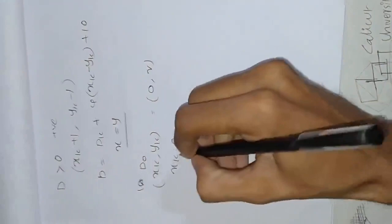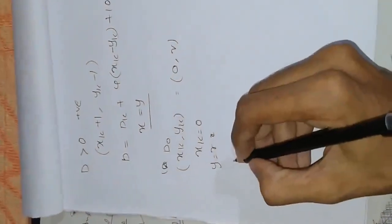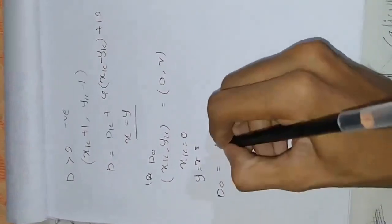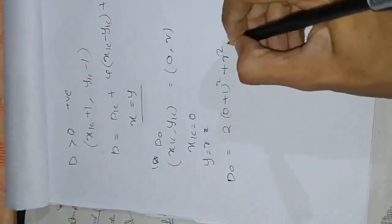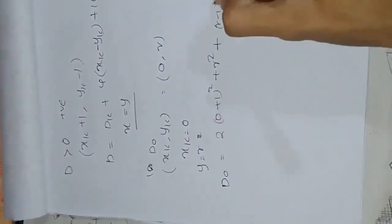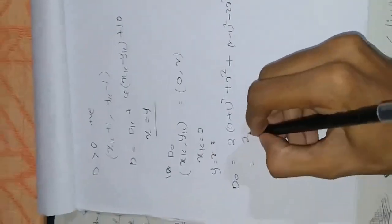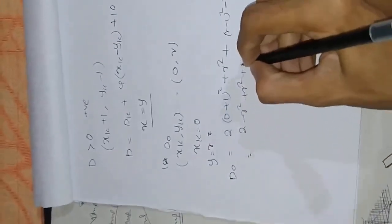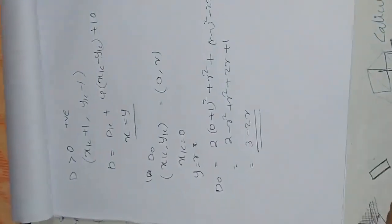The initial point is xk equals 0, yk equals r. The initial decision parameter D0 is calculated at point xk equals 0: D0 equals 0 plus 1 all square plus r squared, giving D0 equals 1 minus r.